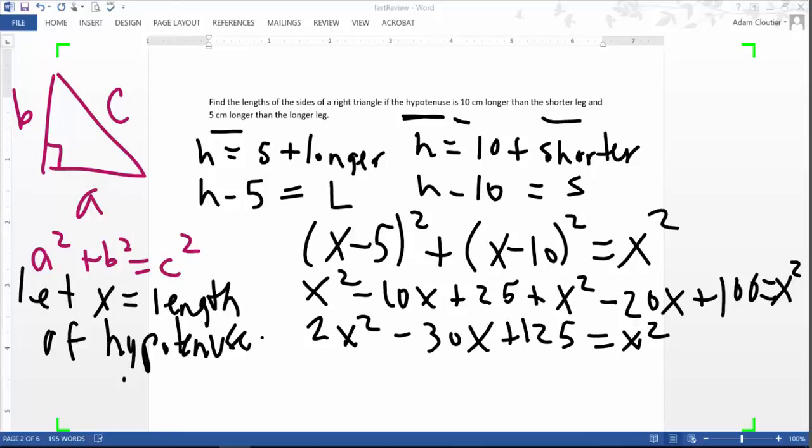Now remember, when solving a quadratic equation, the first thing we have to do is get it equal to zero. So subtract X squared from both sides. And when I do that, we'll get X squared minus 30X plus 125 on the left hand side is equal to zero.